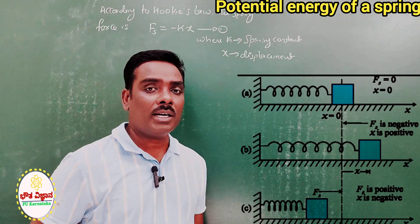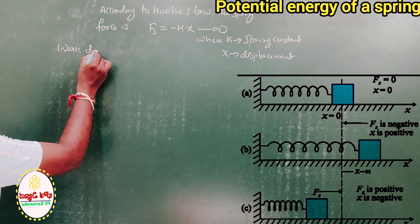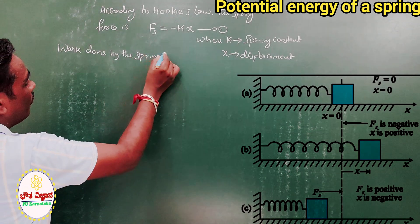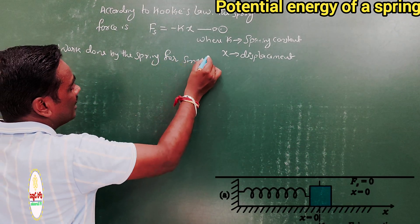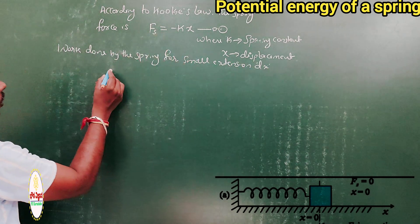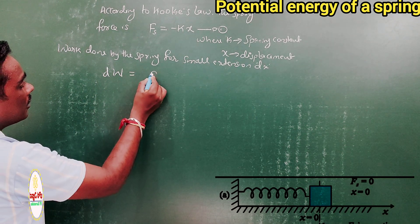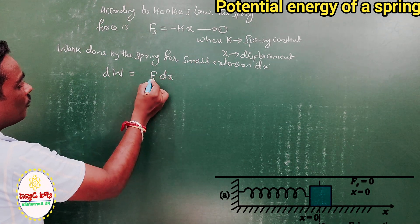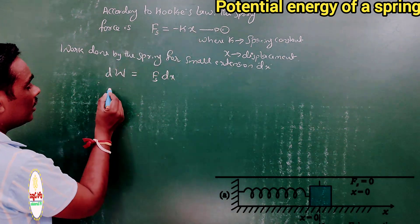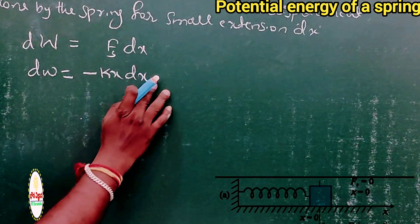Next, we calculate the work done by the spring. The work done by the spring for a small extension dx is: dW = Fs · dx. Substituting the Fs value from equation 1, this work done is dW = −Kx · dx. This is the small work done.